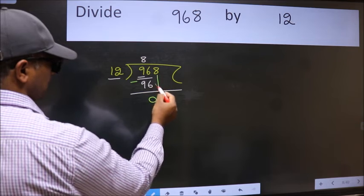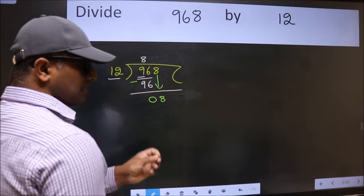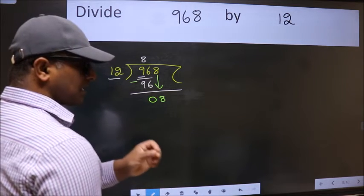After this, bring down the beside number, so 8 down. After this step, the mistake happens, and the mistake is this.